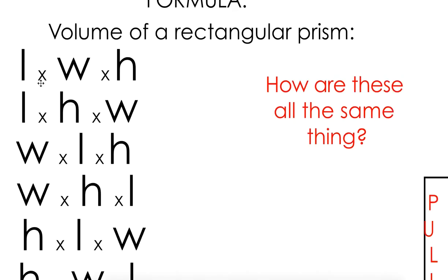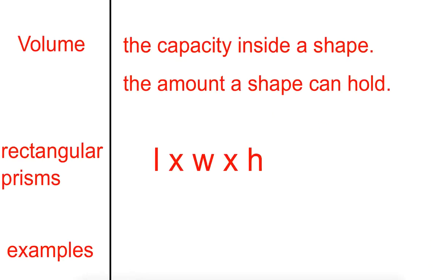So volume can be written as any of these. Length times width times height, length times width times height, width times length times height, and so on and so forth. These are all the same because the Commutative Property says I can multiply in any order.